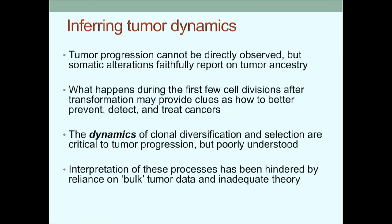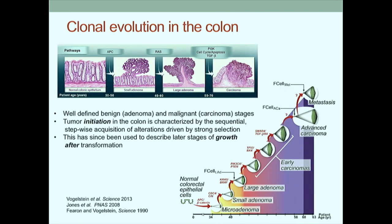I'll focus the first part of my talk using the colon as a model system. This is where aspects of tumor initiation were first worked out by Fearon and Vogelstein some decades ago, and because there are well-defined benign stages of growth - adenomas - as well as non-invasive and invasive carcinomas. The notion that sequential clonal evolution can describe tumor initiation and subsequent stages of growth, whereby a fit morphic clone dominates the population, has become the de facto textbook model.